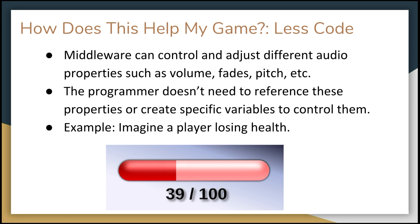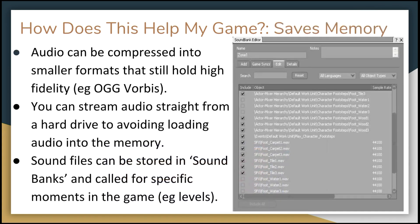You'd need code to trigger the sound and hook parameters to the health variable, but within the middleware you can control the speed and frequency of the heartbeat, add filters so other sounds get quieter, and even fade it in and out slowly as health decreases or recovers. You don't have to save it as a hard cut - it can slowly fade in as health gets lower and fade back out as health picks up.